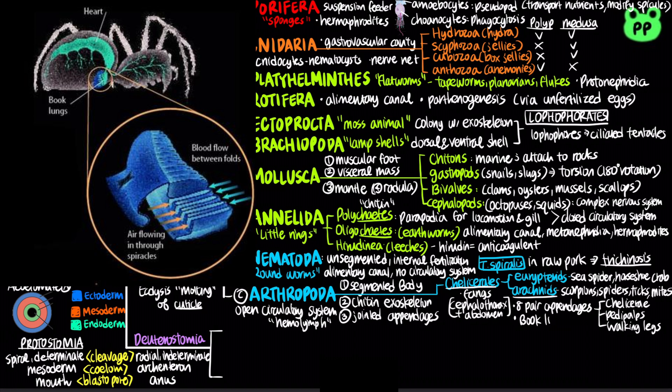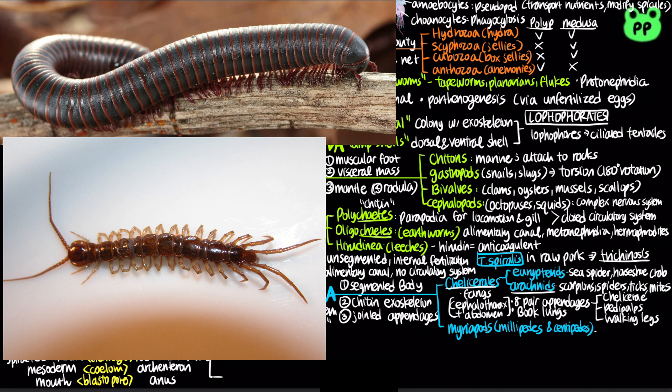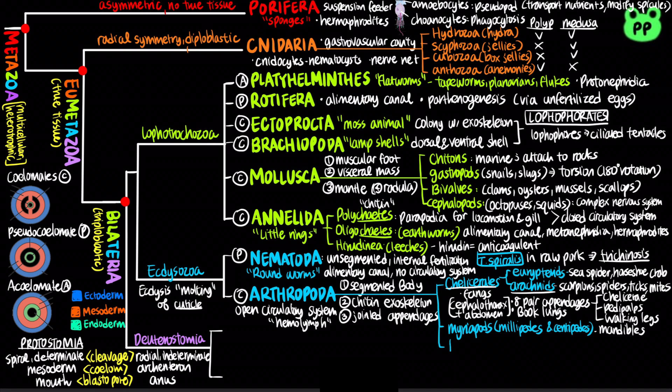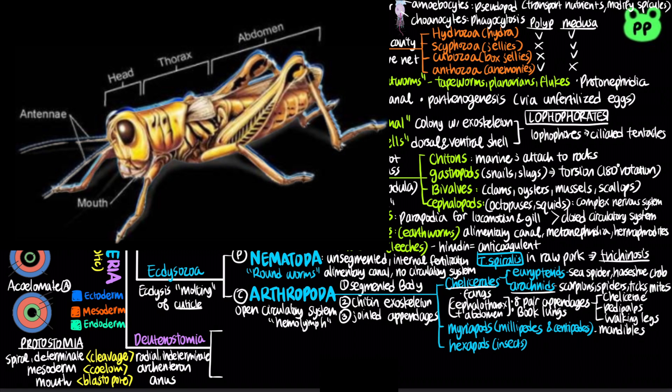The group Myriapoda includes millipedes and centipedes; they are terrestrial arthropods with jaw-like mandibles. The group Hexapoda, which includes insects, has more species than all other forms of life combined. Insects are characterized by three body segments: head, thorax, and abdomen.